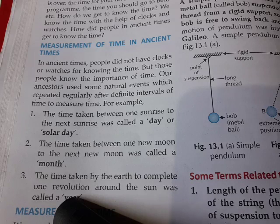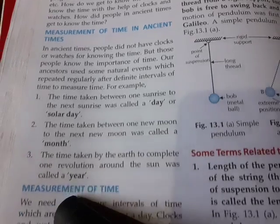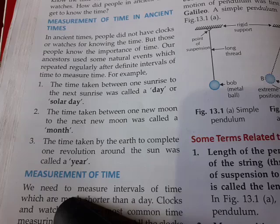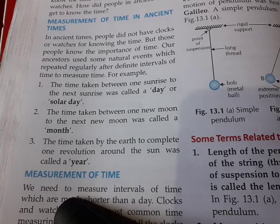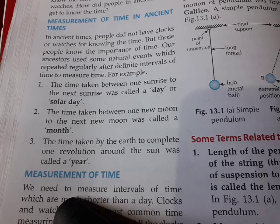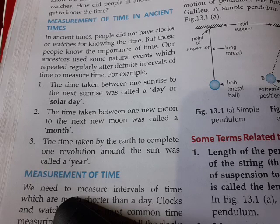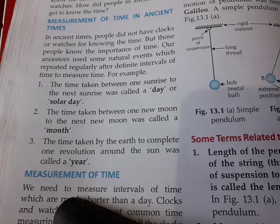The time taken between one new moon to the next new moon was called a month. And they knew that when the moon completes its sixteen phases — first you see it full and round, then it gradually diminishes and disappears (amavasya condition), then gradually grows again — so from one full moon to the next full moon, that time was considered one month.